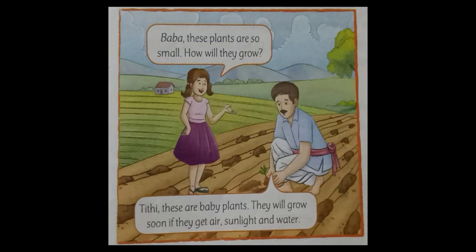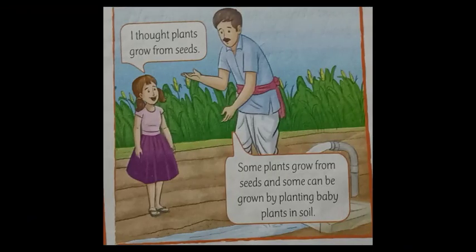Let me give you an introduction. In the picture, a girl is talking to her father. She says, 'Baba, these plants are so small — how will they grow?' The father replies, 'Tithi, these are baby plants; they will grow soon if they get air, sunlight, and water.' In the next picture, the girl says, 'I thought plants grow from seeds,' and the father replies, 'Some plants grow from seeds, and some can be grown by planting baby plants in soil.'